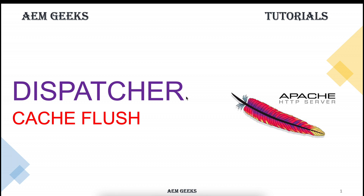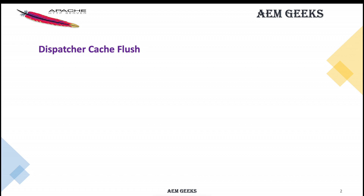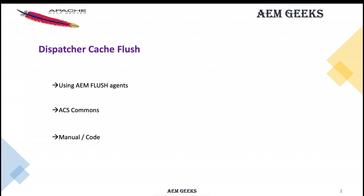In this tutorial, I'll talk about setting up a Dispatcher Flush Agent. Dispatcher Flush Agent is used to clear dispatcher cache. We have multiple ways of clearing cache: we can set up a Dispatcher Flush Agent, we have ACS Commons functionality, or you can manually delete cache or write code to clear cache as well. As part of this tutorial, I'll talk about the first option — how to set up a Dispatcher Flush Agent.